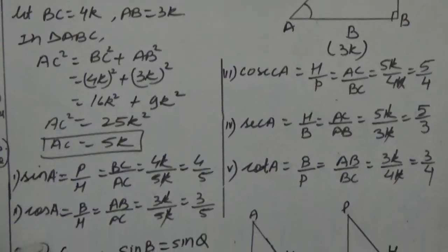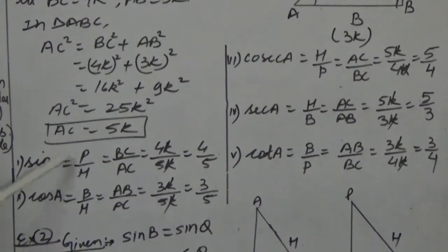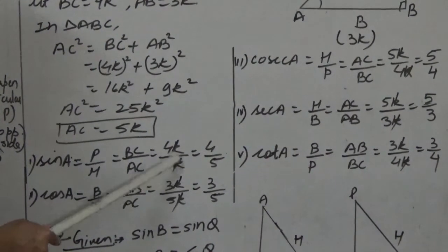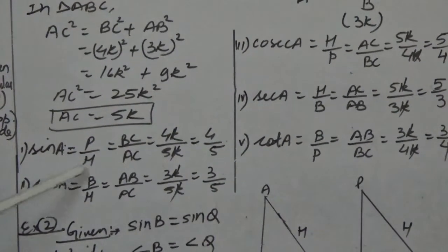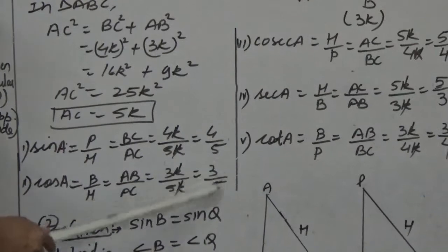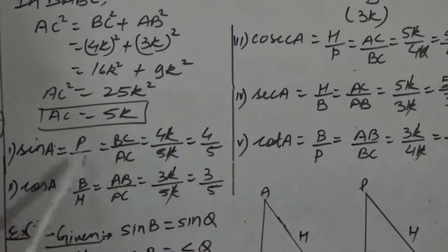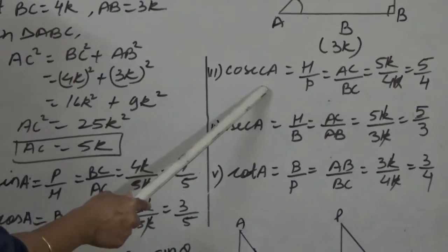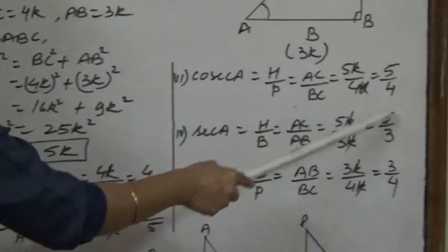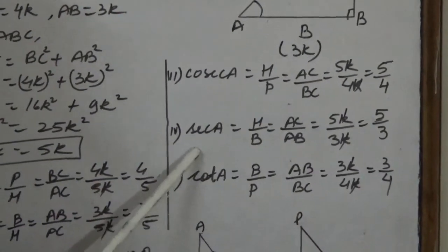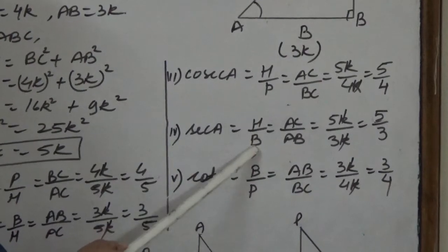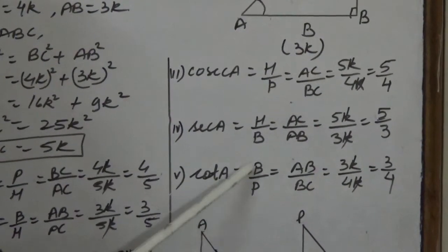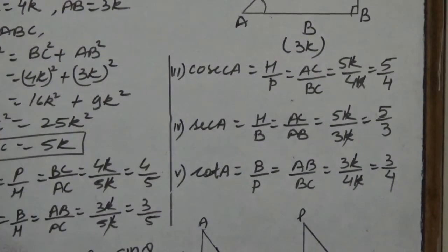Now we find all other trigonometric ratios. Sin A = perpendicular upon hypotenuse = BC upon AC = 4k by 5k = 4 upon 5. Cos A = base upon hypotenuse = AB upon AC = 3 upon 5. Tan was already given. Cosec A = hypotenuse upon perpendicular = 5 by 4. Sec A = hypotenuse upon base = 5 by 3. Cot A = base upon perpendicular = 3 by 4.